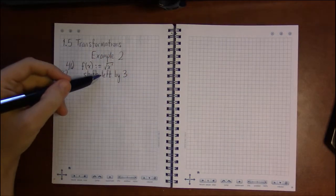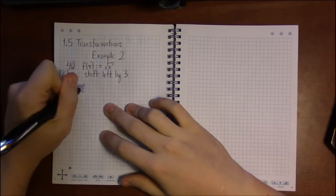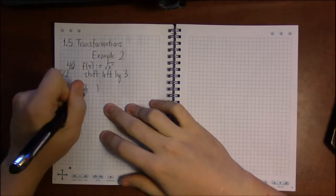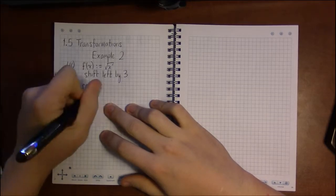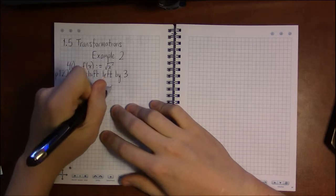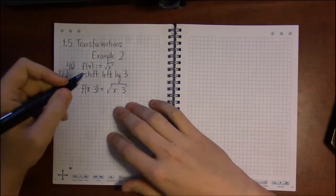So this is a horizontal transformation. So our result should look something like f of x plus or minus three. It's going to be square root of x plus or minus three.